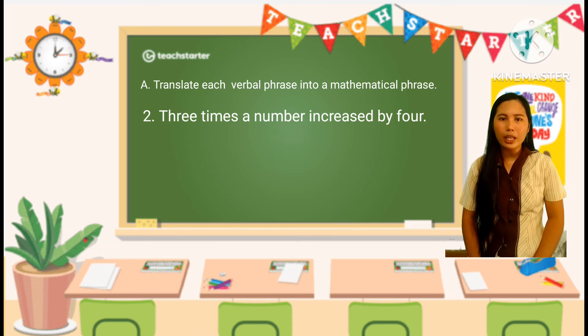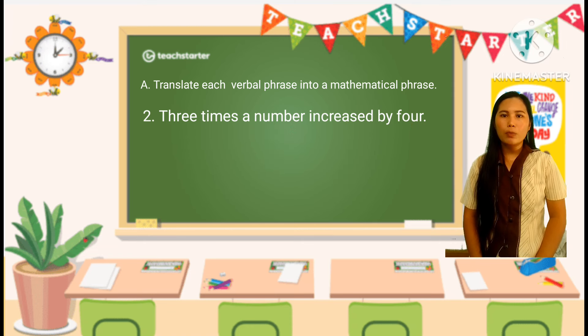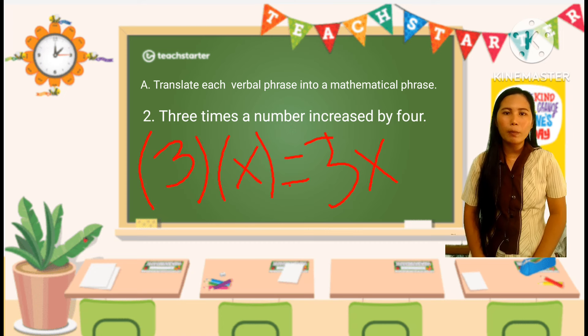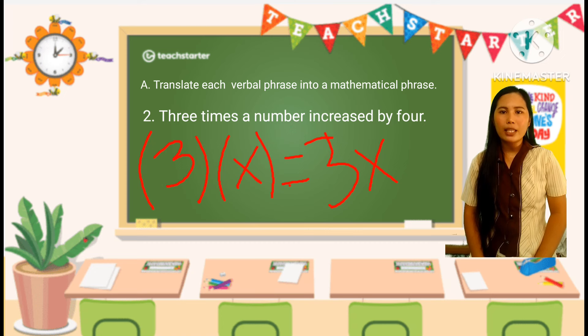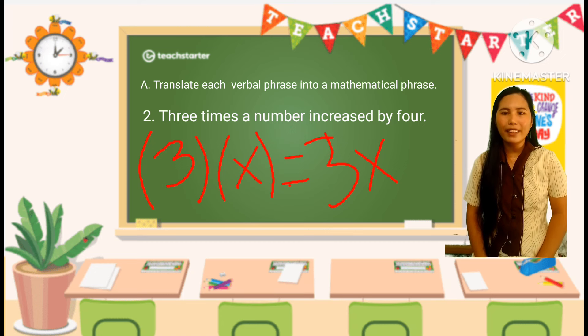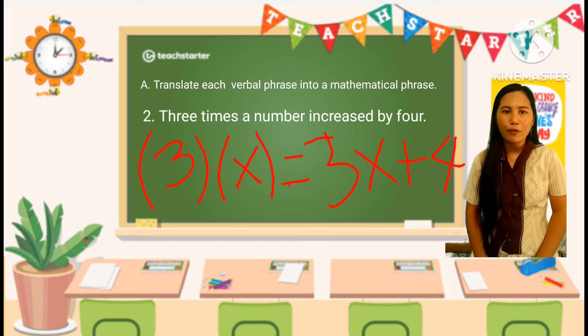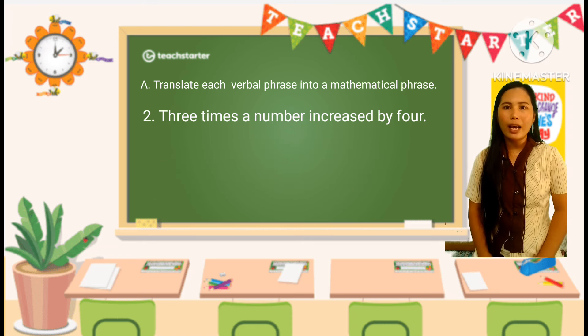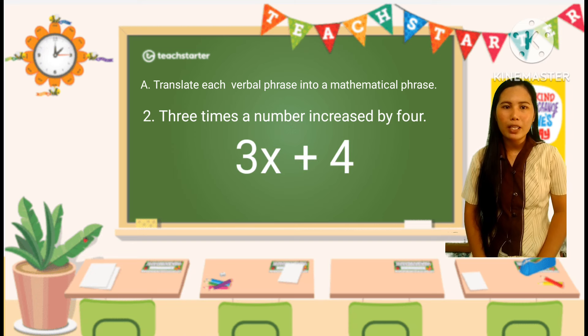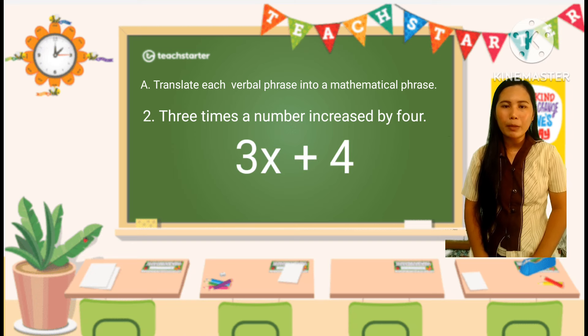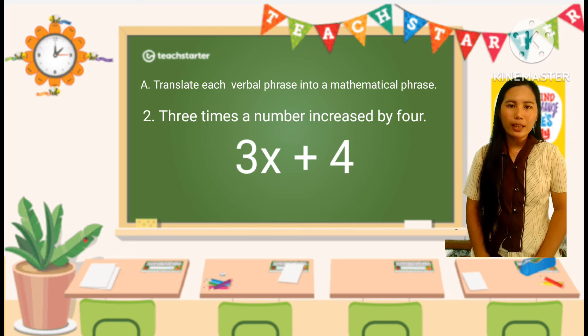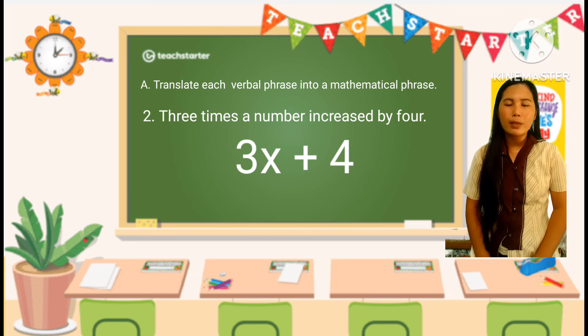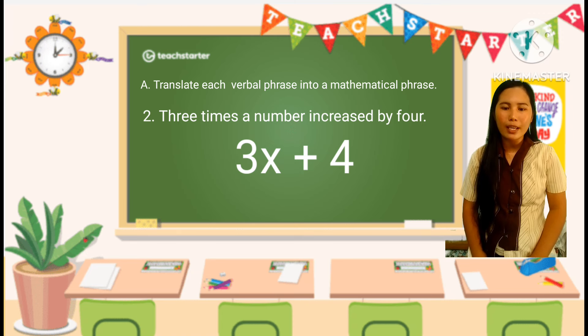Translate an algebraic expression to express three times a number increased by 4. Mathematically, you first multiply the variable x by 3 and then add 4 to the result. The mathematical expression would then be 3x plus 4. Therefore, the mathematical phrase for three times a number increased by 4 is 3x plus 4.